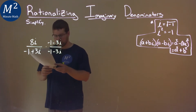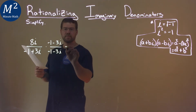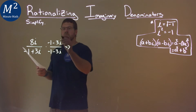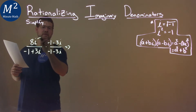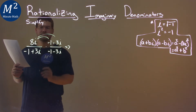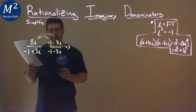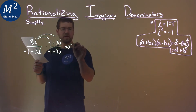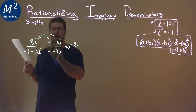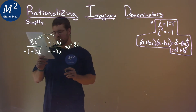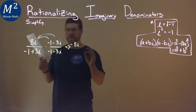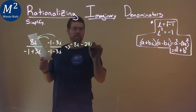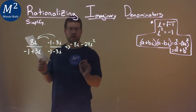What does this do for us? We multiply it out. In the numerator we have to distribute that 8i first. So 8i times negative 1 is negative 8i. And 8i times negative 3i is negative 24i squared.